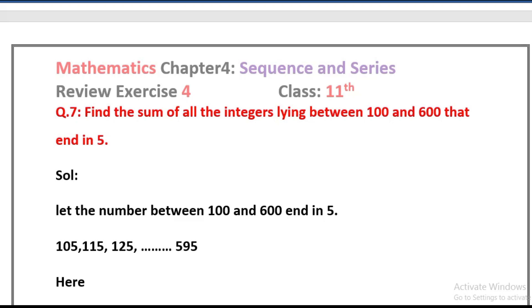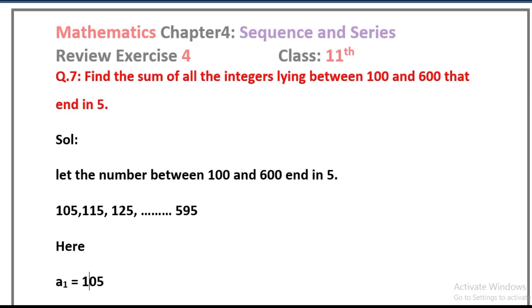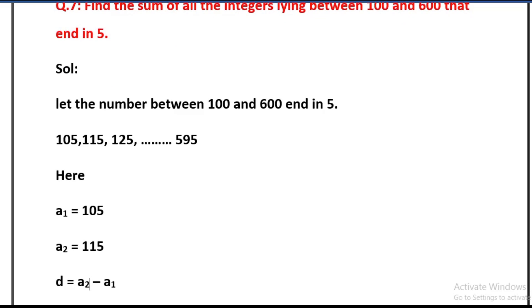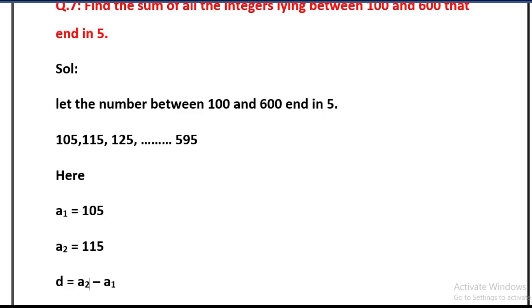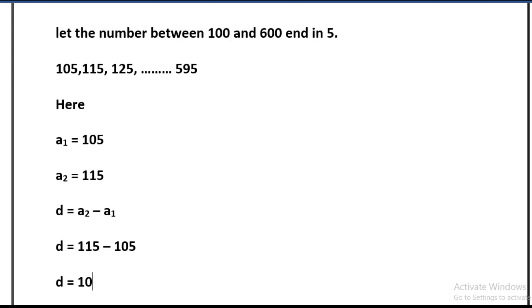Here, first term, that is a1, is equal to 105. a2 is equal to 115. So d is the common difference. d equals a2 minus a1. Value of a2 is 115 minus 105 which equals 10. So d equals 10.